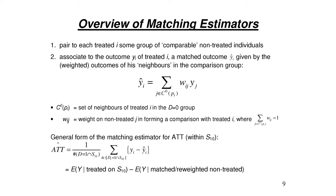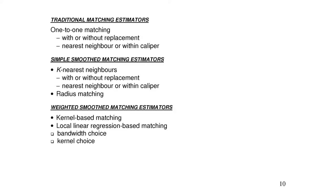Traditional matching estimators include one-to-one or pair matching: to each treated you match one non-treated, where the weight is 1 for the nearest neighbor and 0 for everybody else. You can match with or without replacement. With replacement means a non-treated unit can be used as a match for more than one treated individual, minimizing bias at the cost of increased variance. Without replacement means once a non-treated is used, it can't be used again.